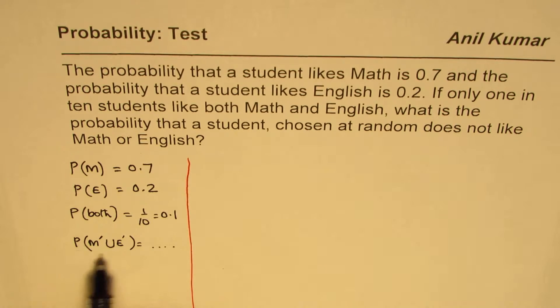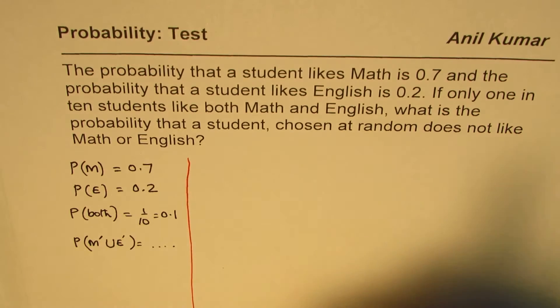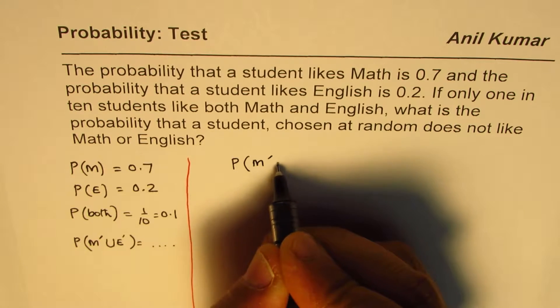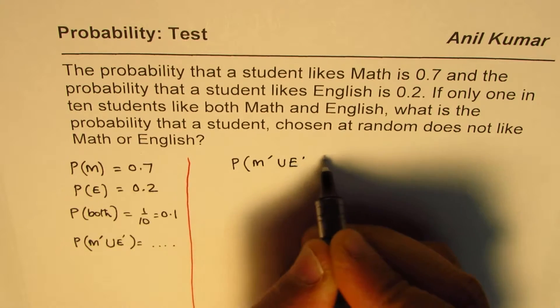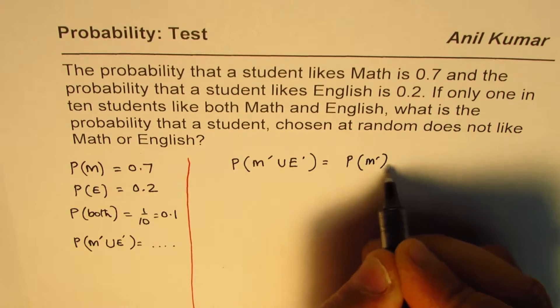Now to find this probability, we can always use the method of inclusion and exclusion.